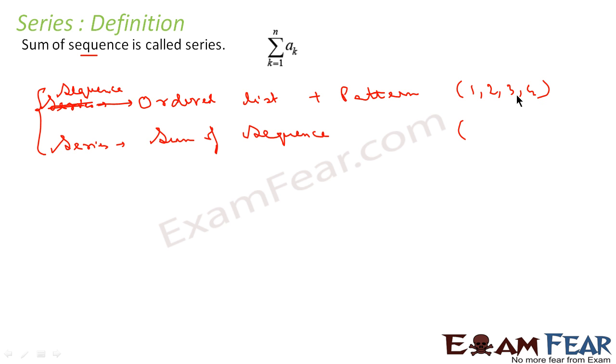That is 1 plus 2 equals 3, 3 plus 3 equals 6, 6 plus 4 equals 10. So this 10 is series. That is 1 plus 2 plus 3 plus 4. So you got Sequence is nothing but ordered list or pattern. Series is the sum of Sequence.